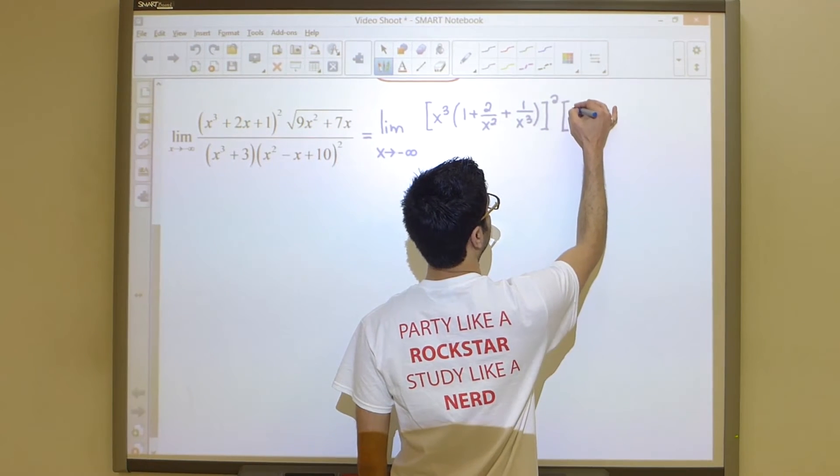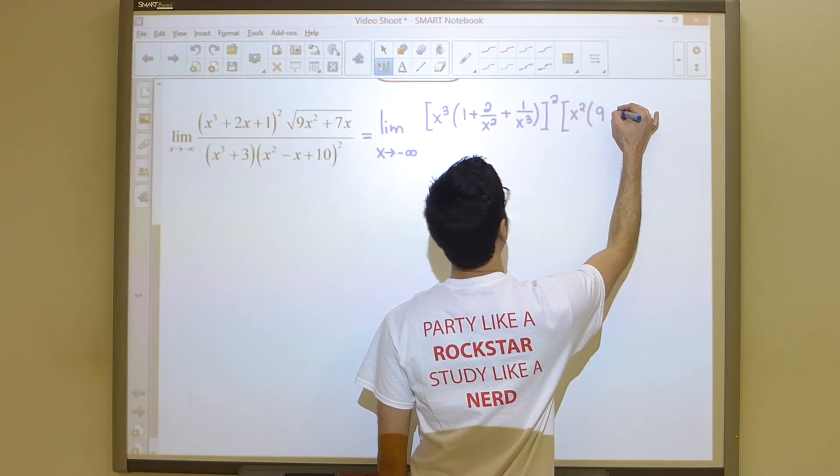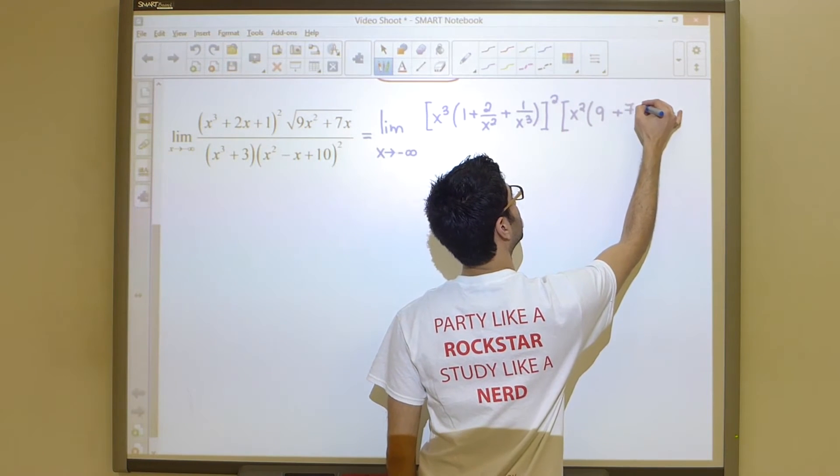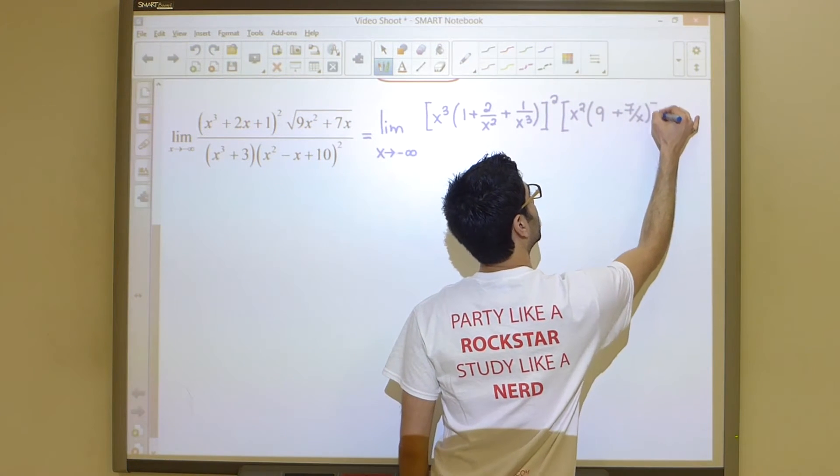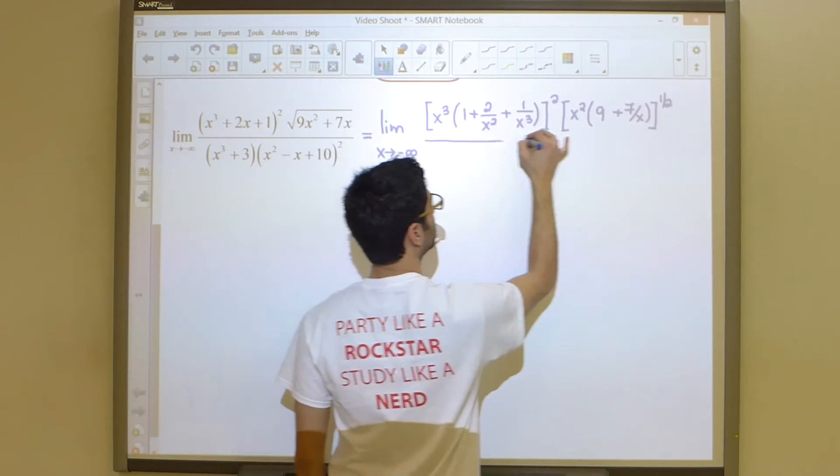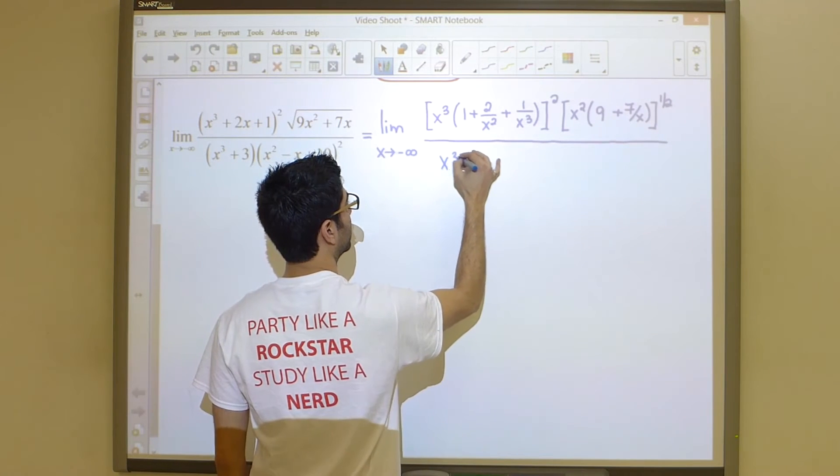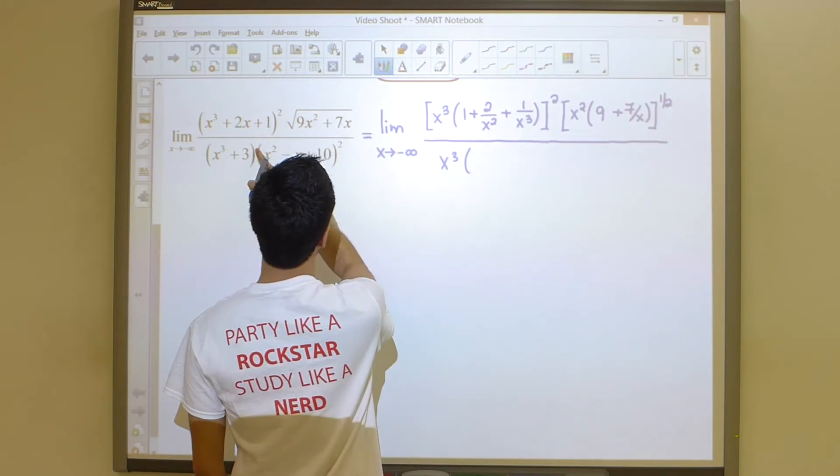Now the square root is like saying power of one-half, so it's equivalent to having an outside power, so it's going to remain where it is. But I will factor out the x squared. If I factor out the x squared, what I'm left with is nine plus seven over x, and the square root can become a power like so.